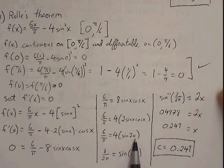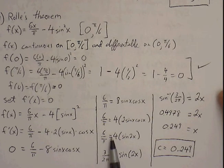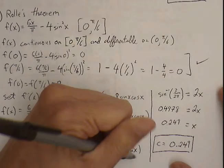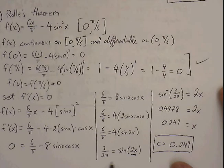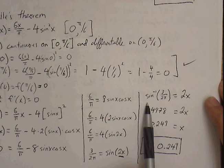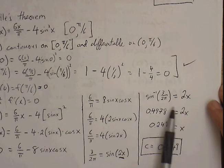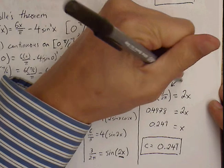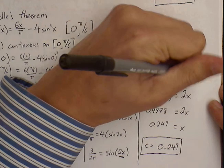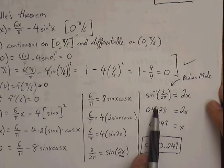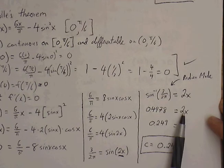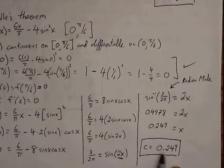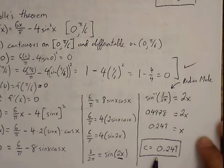Dividing both sides by 4 gives us 3 over 2 pi equals sine of 2x. Using inverse sine, inverse sine of 3 over 2 pi equals 2x. Plug this into your calculator in radian mode: inverse sine of 3 over 2 pi gives 0.4978, which equals 2x. Dividing both sides by 2 gives x equals 0.249. So c equals 0.249, which does lie within our closed interval of 0 to pi over 6.